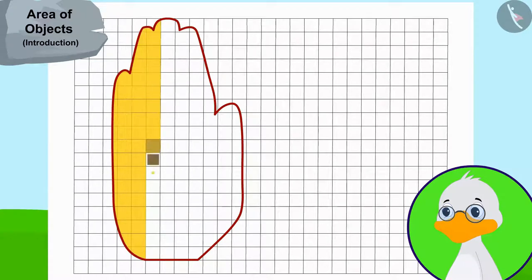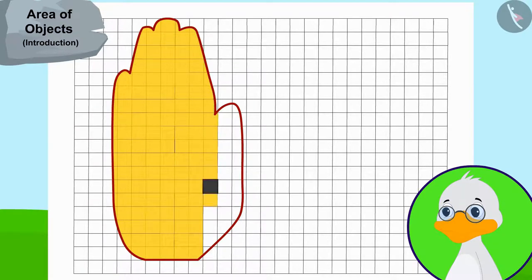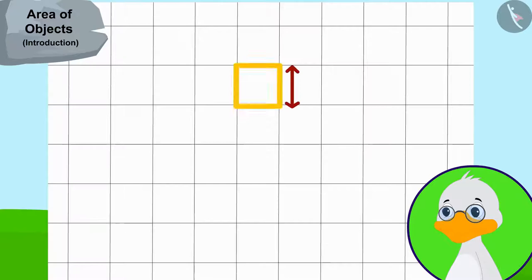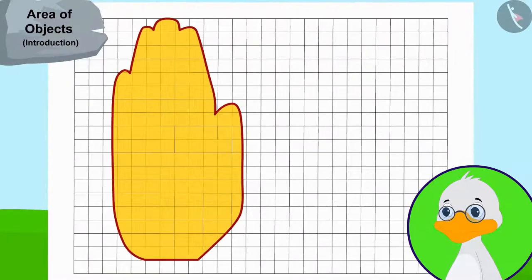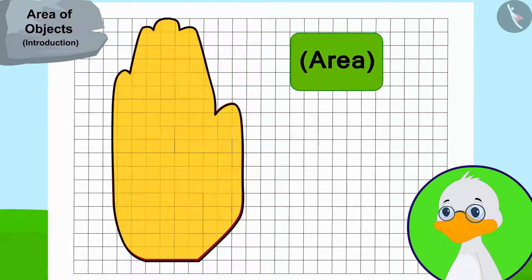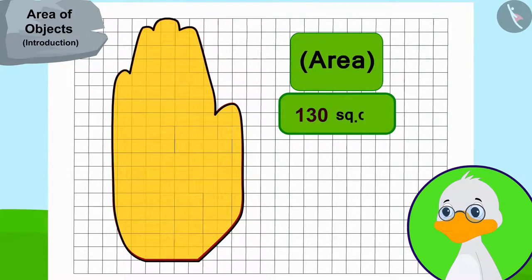It took a long time for uncle to do this process. And finally, he came to know that the hand impression is covering 130 squares. The side of each square is one centimeter long. Therefore, the area of this hand impression is 130 square centimeters.